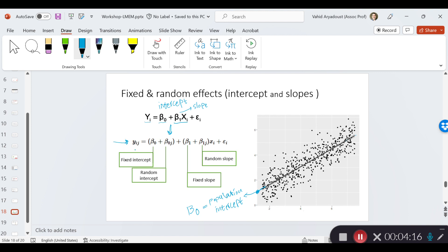The formula reads y, which is the independent variable index ij, is predicted by the intercept of the population, which is exactly the same thing, the same term which was used before, plus a random intercept.